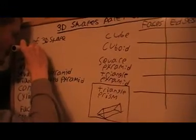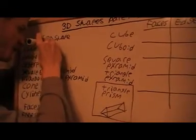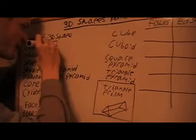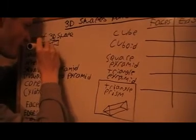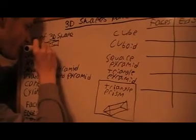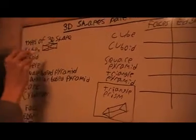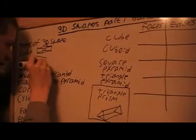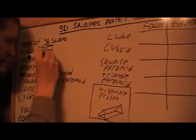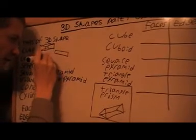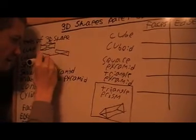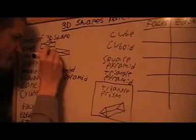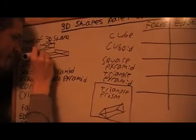We've got a cube — to draw one, you do a square and then another square, and then you can join them up like that. On a cube they're all the same. A cuboid is very similar, but they're not the same at all, which would look something like that.